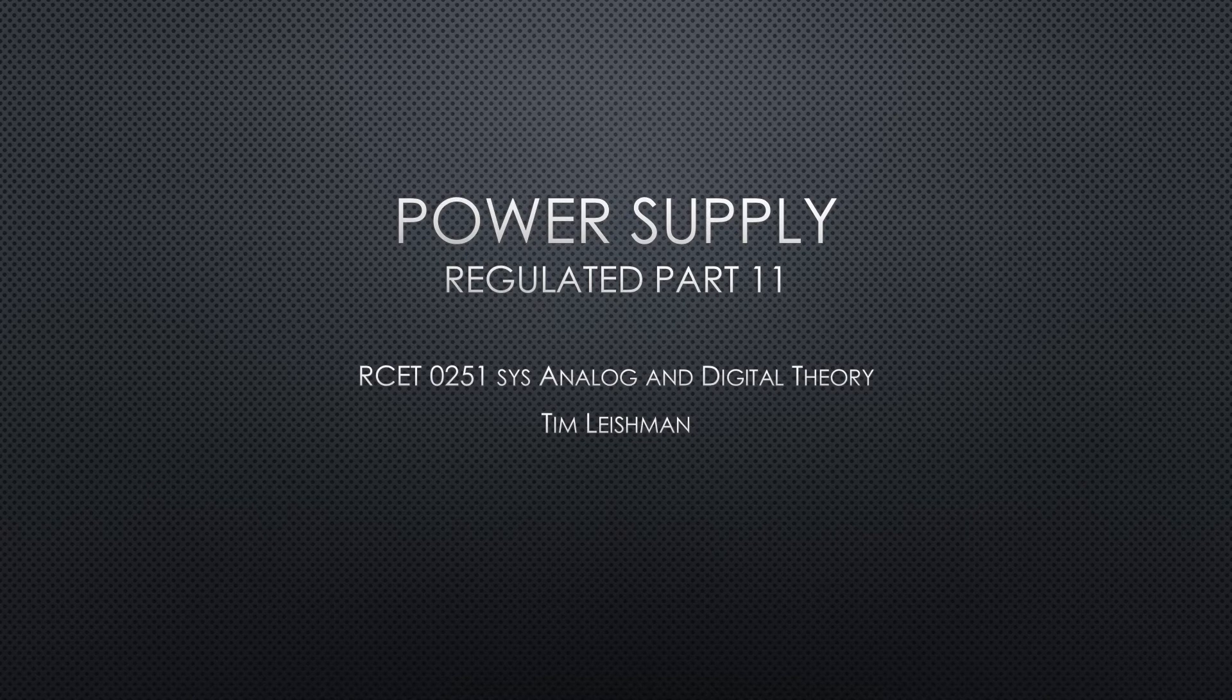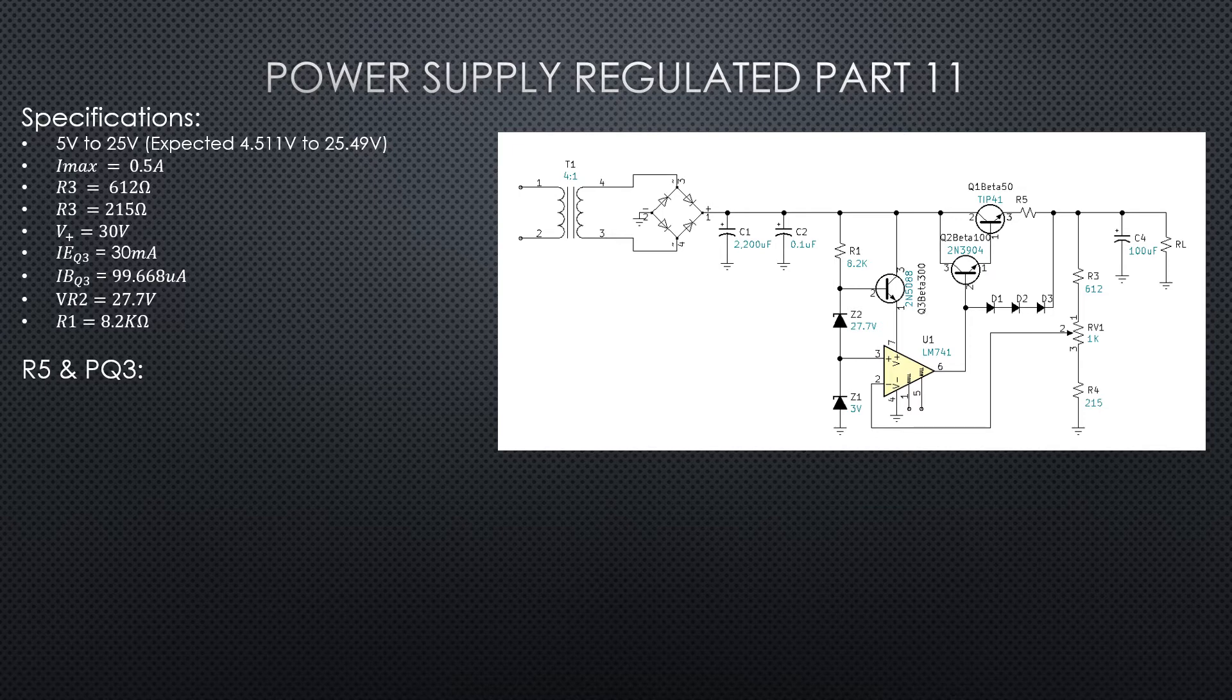Welcome to Regulated Power Supplies Part 11. All right, so in our previous video we solved for R1 value. We got the voltage for U1 on pin 7, the V plus voltage, nice and rock solid stable at 30 volts. Now we need to look at this, the final video for this fixed current regulating, and then we're going to go into variable current regulating. What we need to do next is determine the R5 value, and we also need to look and solve for the power for Q3.